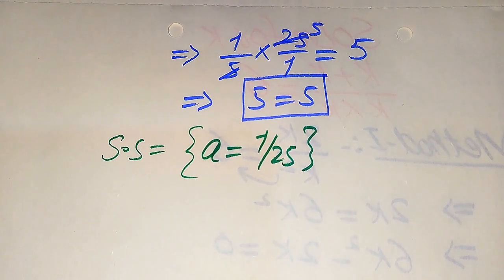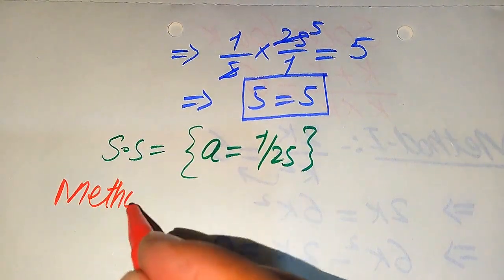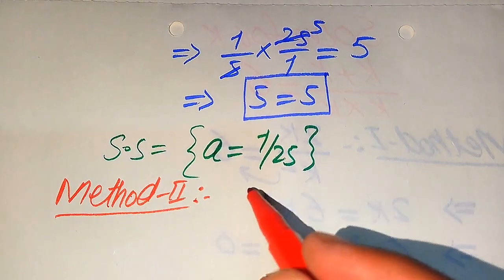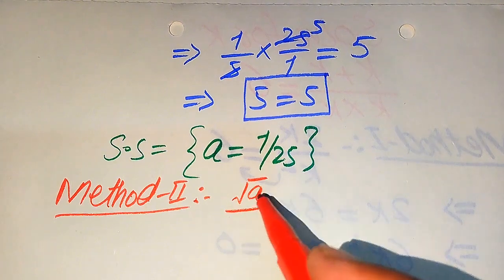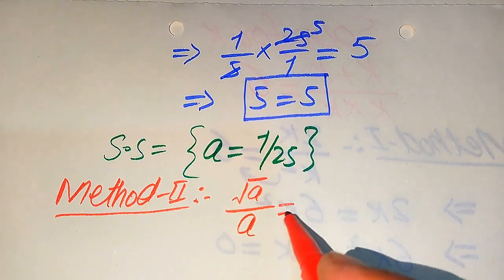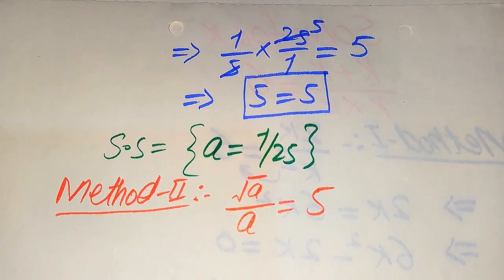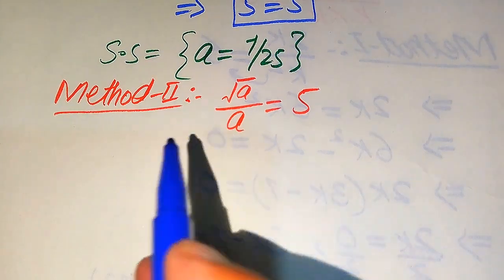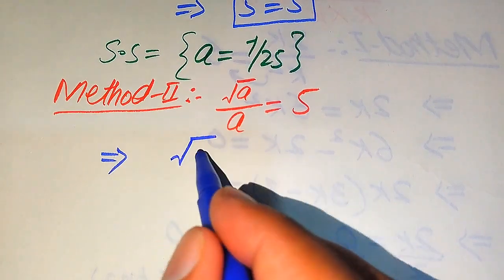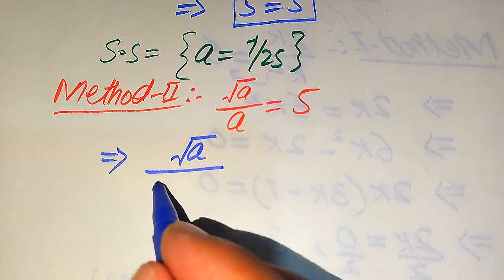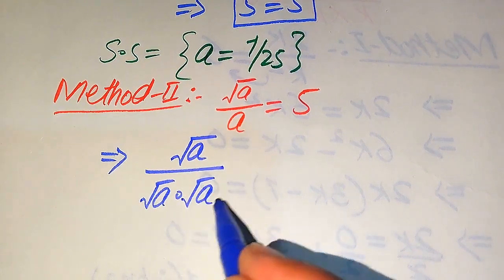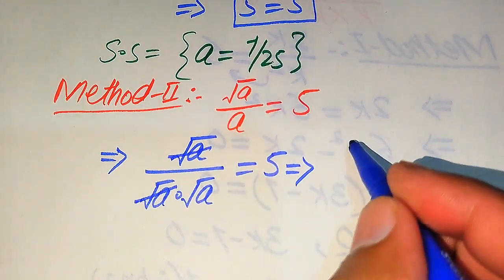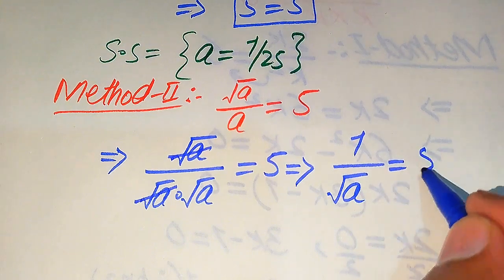In the next step we solve this problem using the second method — a quicker technique to find the roots. We copy down the given equation: square root of a divided by a equals 5. We rewrite a in the denominator as square root of a times square root of a. So it becomes square root of a divided by (square root of a times square root of a) equals 5. The square root of a in the numerator cancels with one in the denominator, leaving 1 divided by square root of a equals 5.